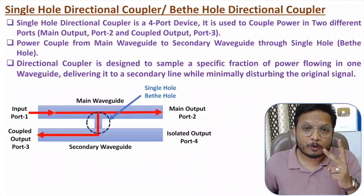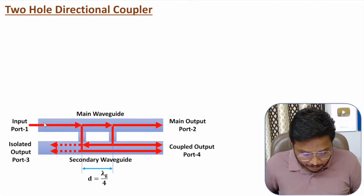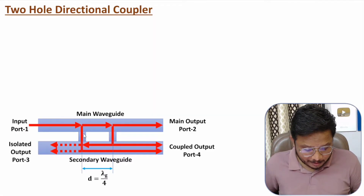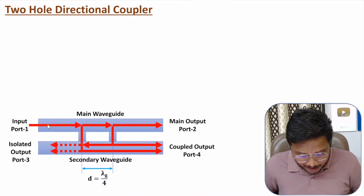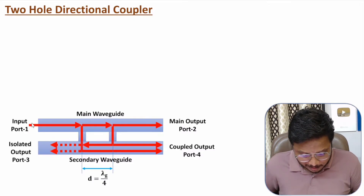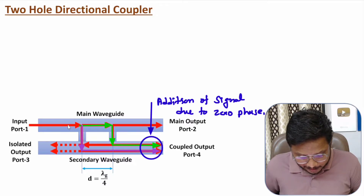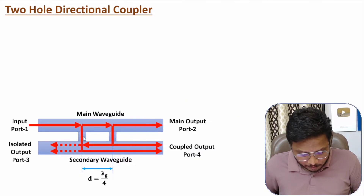Now I will explain the two hole directional coupler. In this design, the main waveguide has two holes, and coupling of signal from the main waveguide to the secondary waveguide occurs via these two holes. The spacing between the two holes is lambda-g by 4. As the signal flows in the forward direction, the signals coupled through both holes have zero phase difference, causing them to add together at the coupled output port.